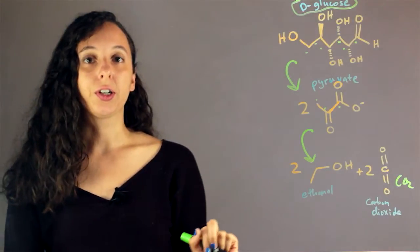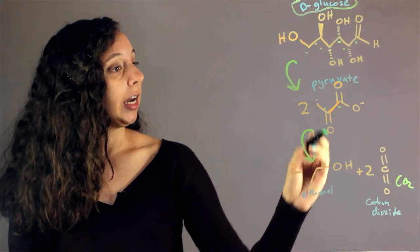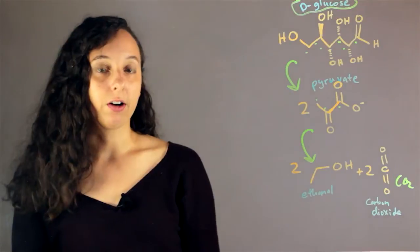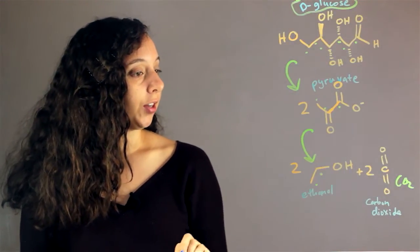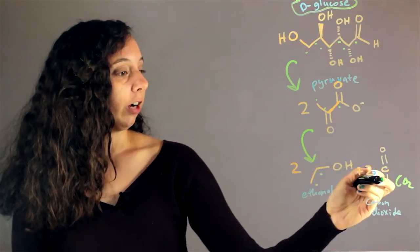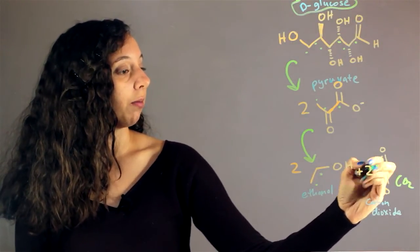Let's look at the structures more closely. Pyruvate has three carbons and ethanol has two. So this is one less, and we can see that our third carbon went to carbon dioxide.